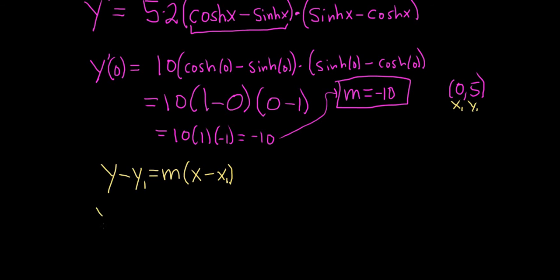y1 is 5, so we have y minus 5. m is negative 10, parentheses, x minus, and then x1 is 0. So we have y minus 5 equals negative 10x.